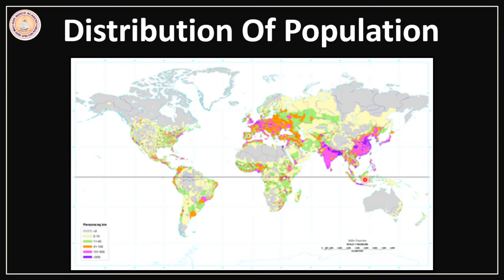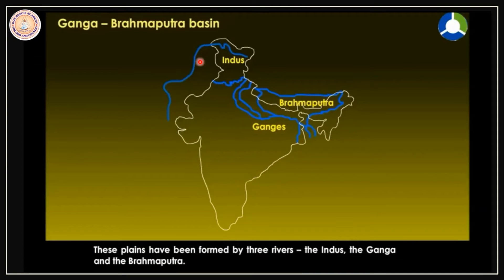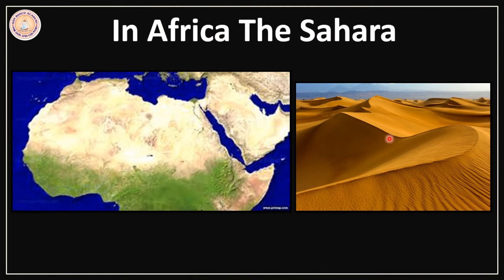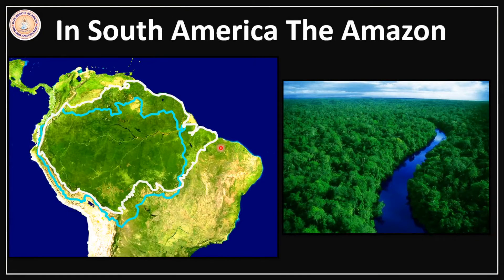Some areas like in India, the Brahmaputra, Ganga Valley and Basin, we find that population concentration is very high. In the northeastern part of USA also, we find that concentration of population is pretty high. However, areas like the Sahara, the Amazon rainforests, these areas are almost uninhabited.